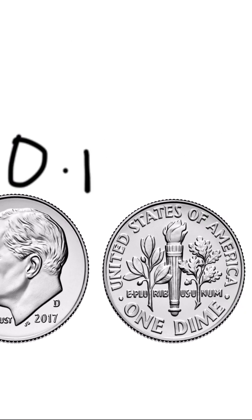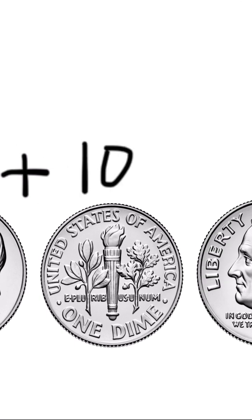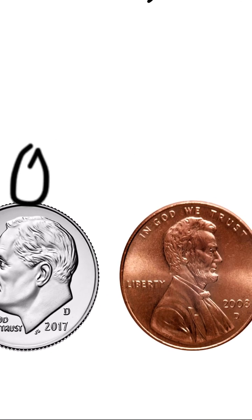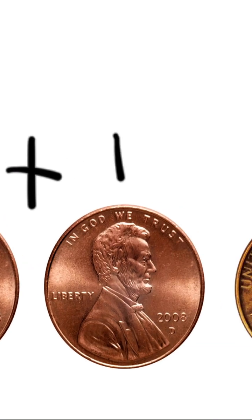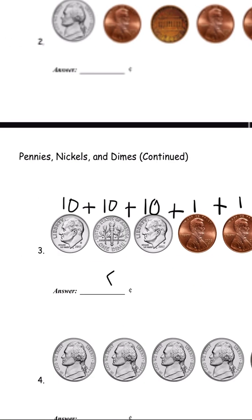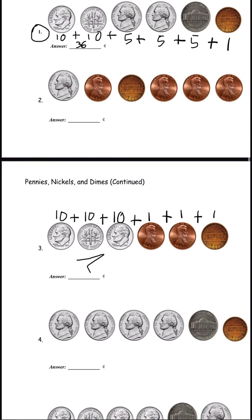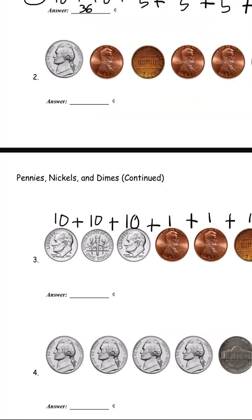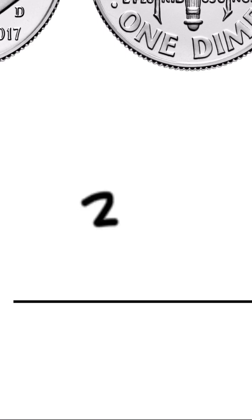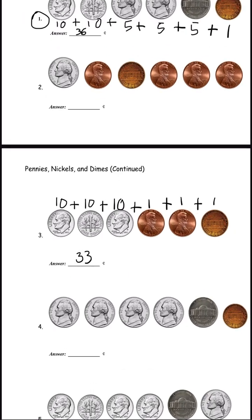Let's try number three. This is a dime, this is a dime, and this is also a dime. Then this one is a penny which is one, and another penny which is one, and another penny which is one. We just have to add all of them — ten plus ten plus ten is thirty because there are three tens.